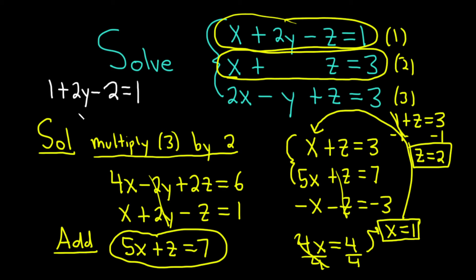1 minus 2 is negative 1. So we have 2y minus 1. And that's equal to 1. And you can add 1 to both sides. So we get 2y equals 2. And just divide by 2. And so we get y equals 1.